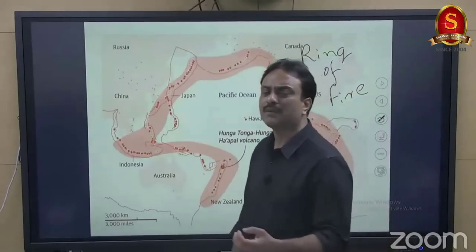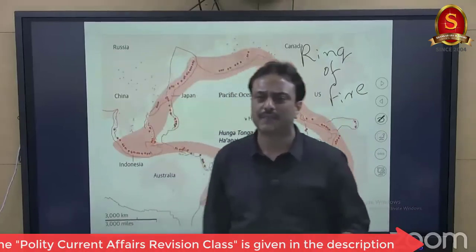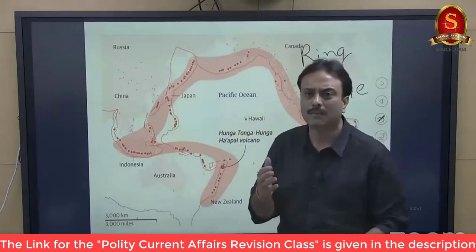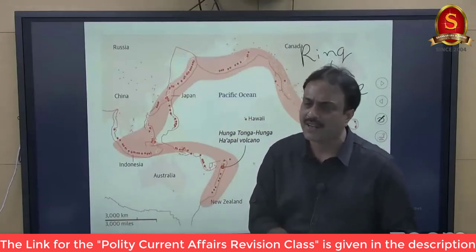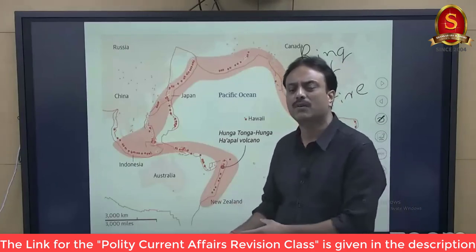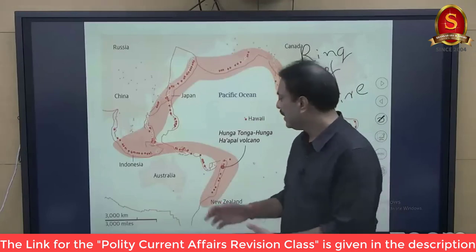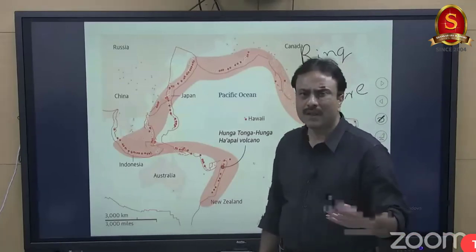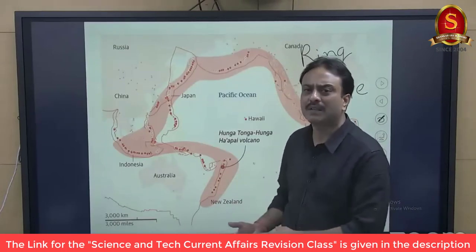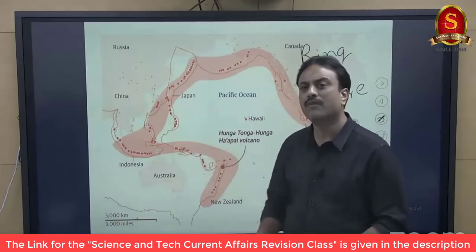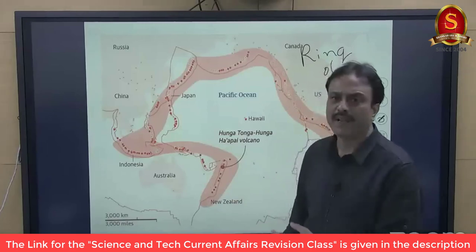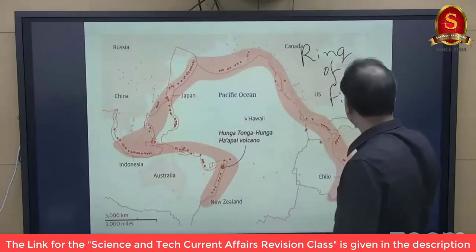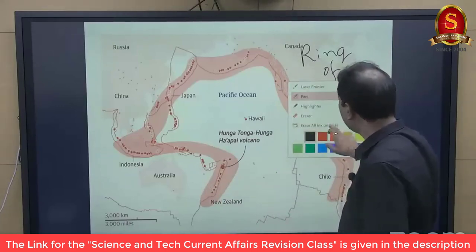Such a massive volcanic eruption cannot occur frequently — it requires accumulation of huge amounts of magma, heat energy, and stress over a long period of time. Therefore, another eruption of similar magnitude in the same region in the near future is unlikely, though not impossible. This region represents the Pacific Ring of Fire, and the Tonga eruption's importance lies in its location on this tectonically active zone.